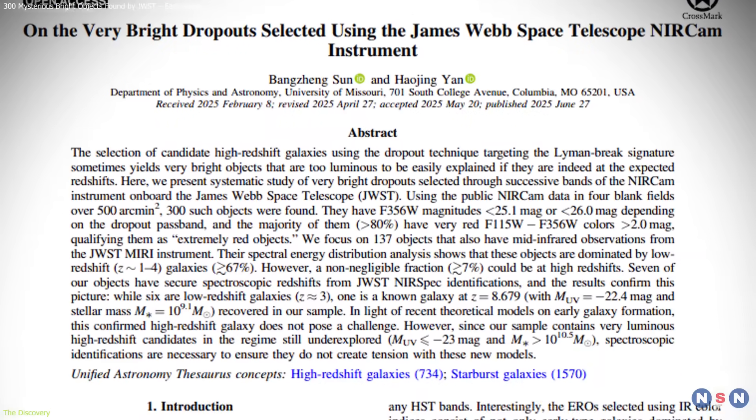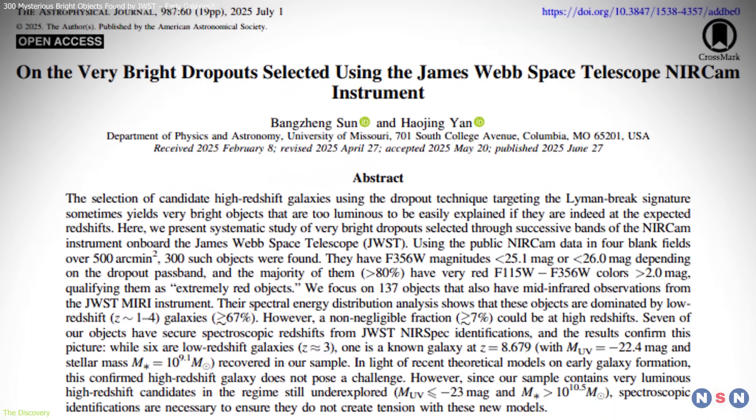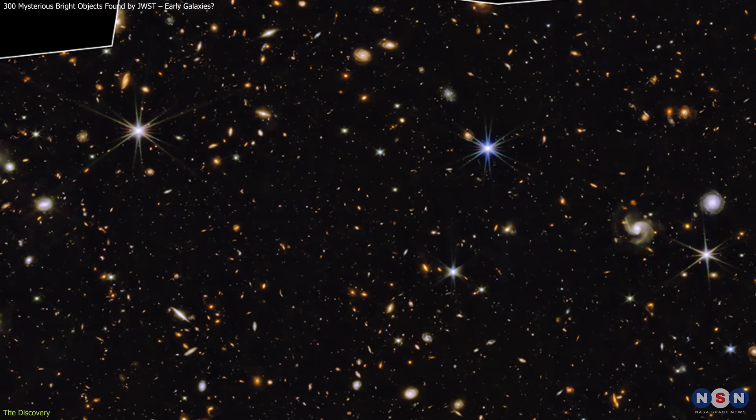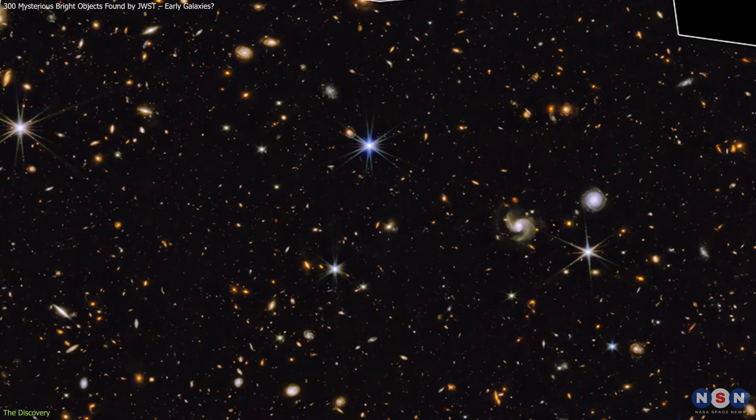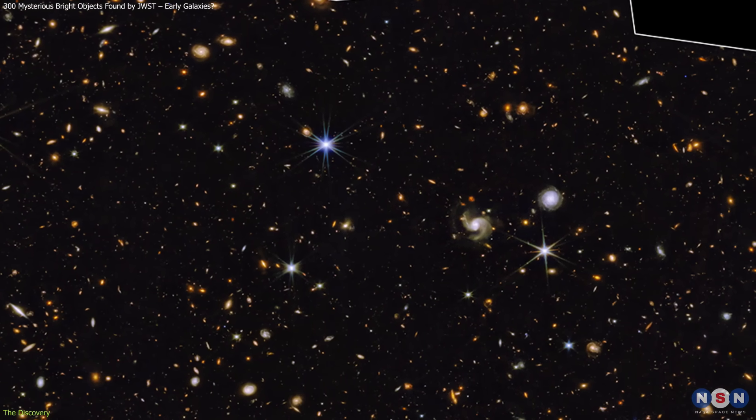In this study, the researchers observed four deep sky fields, regions deliberately chosen for their lack of nearby bright objects, covering about 500 square arc minutes.